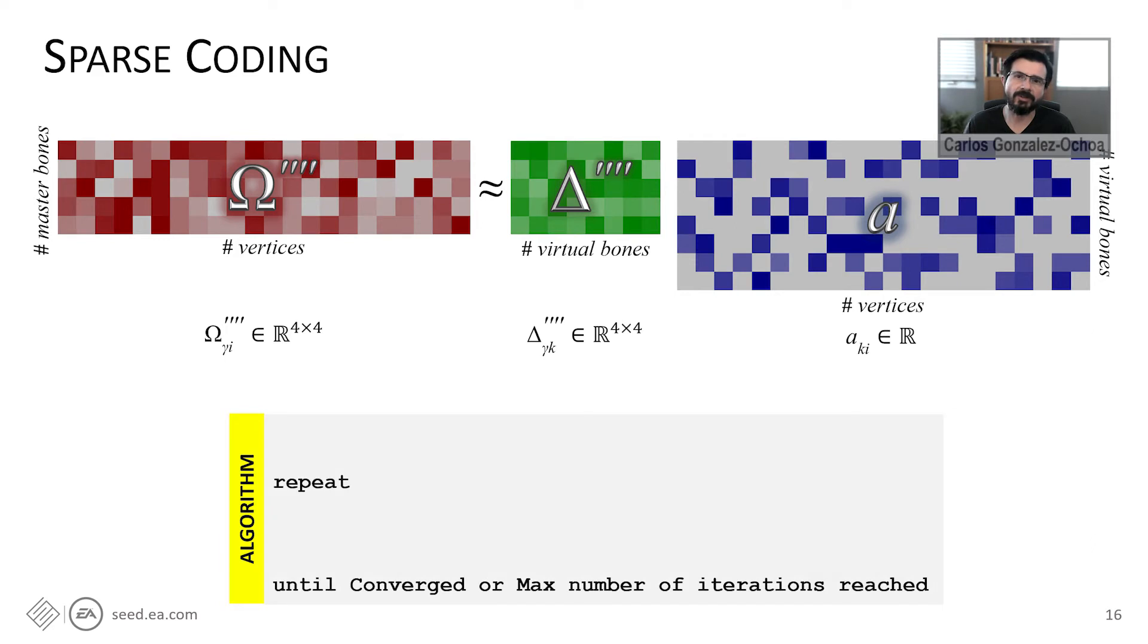So instead of solving this factorization problem in a single step, we use the strategy of an iterative solver alternating between two steps. The first step, we solve for the scalar weights of matrix A, while keeping delta, the virtual bonds multi-weights fixed. Then we solve for delta, the multi-weights of virtual bonds, while keeping matrix A, the scalar weights fixed.